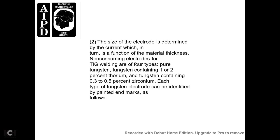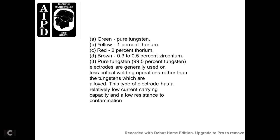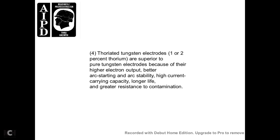The size of the electrode determines the current, which functions with the material thickness. Non-consuming electrode types for TIG arc welding include: pure tungsten, tungsten containing 1–2% thorium, and tungsten containing 3–10% to 5–10% zirconium. Each electrode type can be identified by color markings: green for pure tungsten, yellow for 1% thorium, red for 2% thorium, and brown for 3–5% zirconium. Pure tungsten (99.5%) is generally used for less critical welding operations and has relatively low current-carrying capacity and low resistance to contamination. Thoriated tungsten electrodes (1–2% thorium) are superior because of higher electron output, better arc starting, arc stability, high current-carrying capacity, longer life, and greater resistance to contamination.